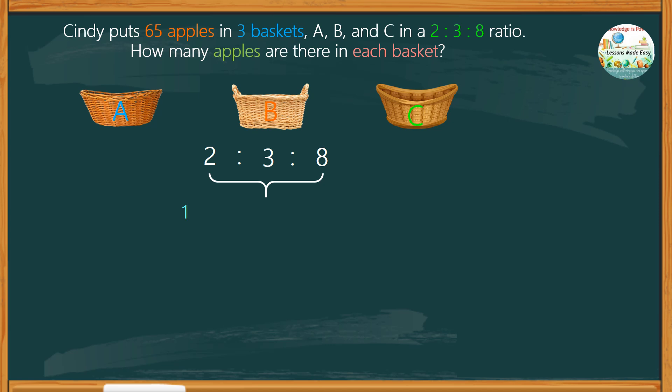There are 13 units altogether, which is equivalent to 65 apples. To find the number of apples in one unit, we divide 65 by 13. That makes one unit equal to 5 apples.